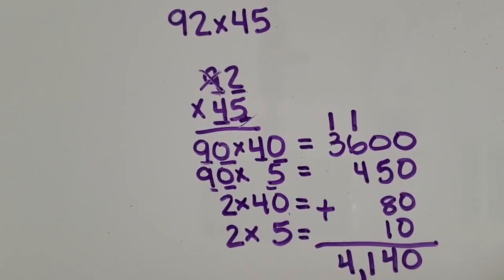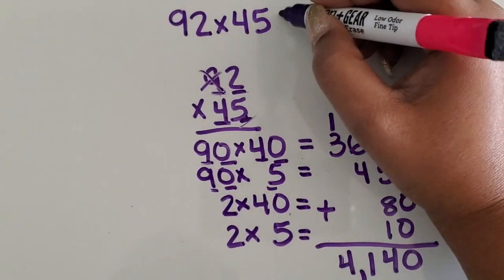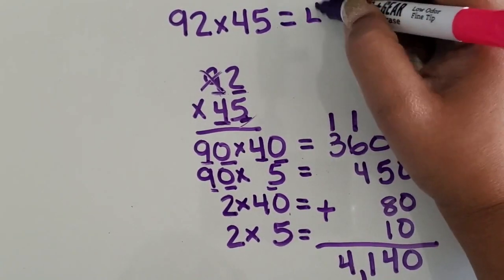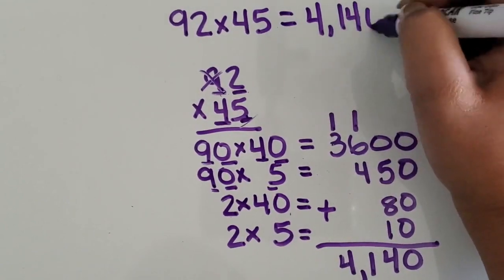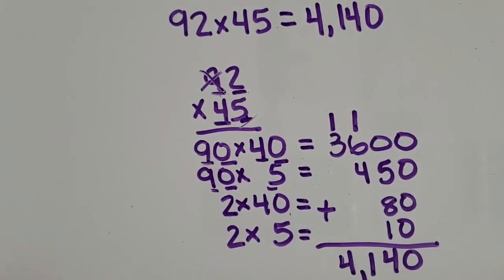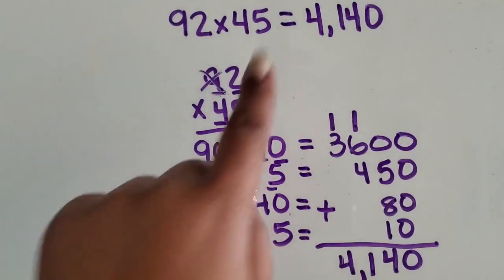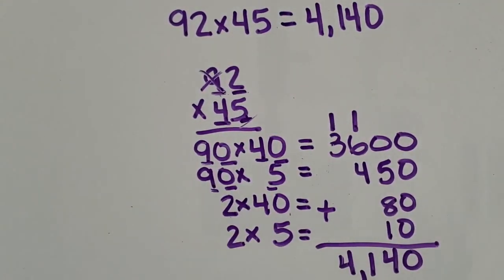So our total product for 92 times 45 is 4,140. We multiplied a two-digit number by another two-digit number using the partial product strategy.